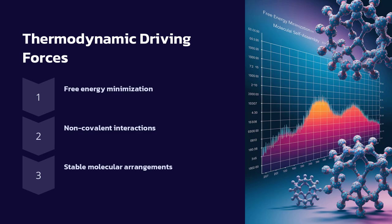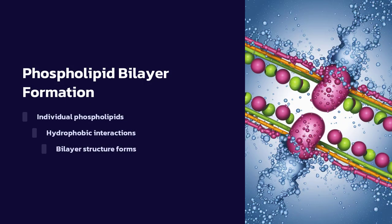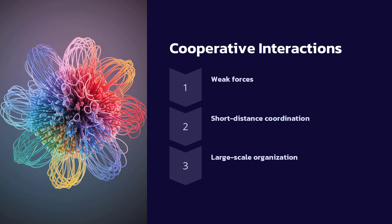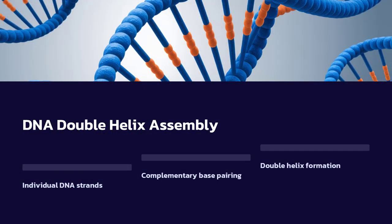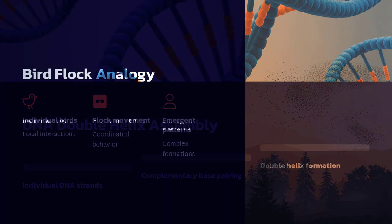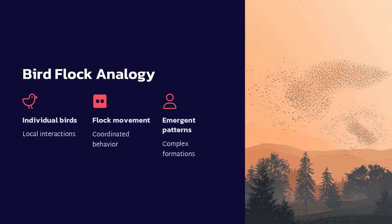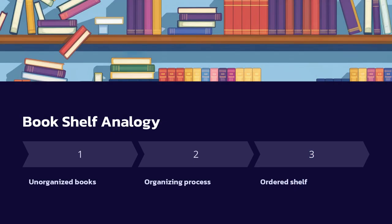Unlike human-engineered machines, which require step-by-step assembly, molecules follow emergent rules that guide them toward functional structures. DNA's double helix forms because base pairs fit together through complementary hydrogen bonding. Cell membranes arise when lipid molecules organize themselves into bilayers, driven by the need to shield their hydrophobic tails from water. Protein folding occurs as amino acids interact, snap into place, and settle into the lowest energy conformation.